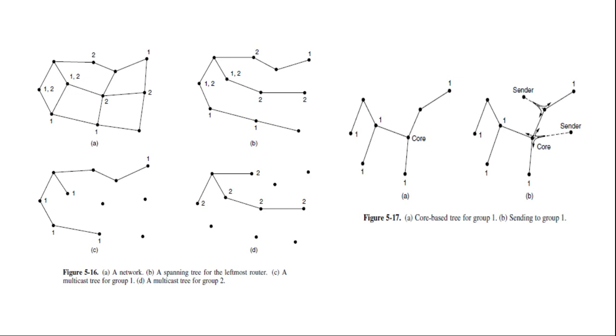Here is an example. There are two groups 1 and 2 in the network. In figure A, some routers are attached to hosts that belong to one or both of these groups as indicated in the figure.